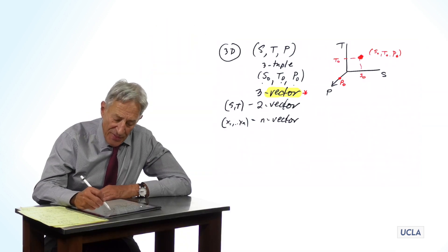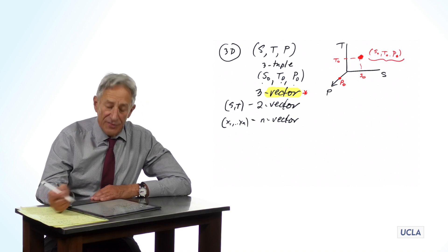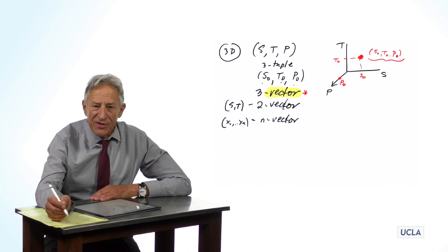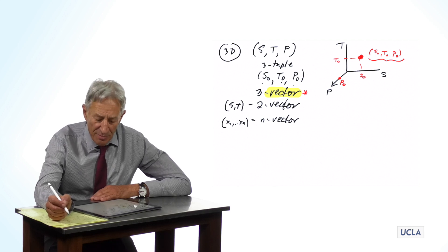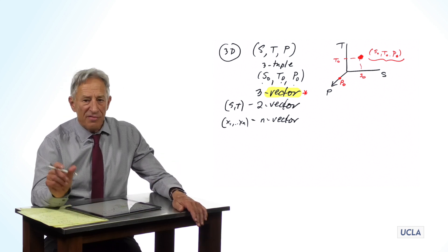So this is the n-tuple that represents, in this case three-tuple, that represents the state of the system at a time. And this is, of course, our three-vector.